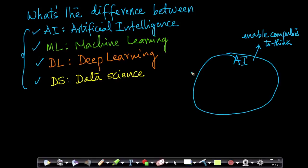So AI is this broad area which enables computers to think. And we named our course Applied AI course because we cover topics from across the spectrum. We cover topics from AI, machine learning, deep learning and data science. So AI is a very broad area.